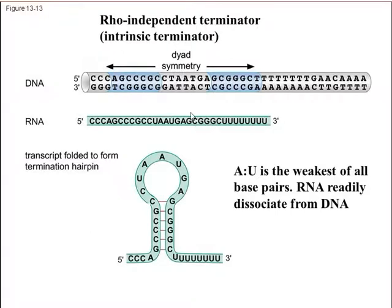The GC-rich region precedes the poly-uridine residues at the 3' end of the mRNA. Because it is self-complementary, this GC-rich region folds into a looped structure — the G base pairs with C, and C base pairs with G. This forms a loop-like structure, which is why it is said to be self-complementary. The complementary regions base pair to form the stem, and the intervening sequences form the loop. This is called a stem-loop structure.